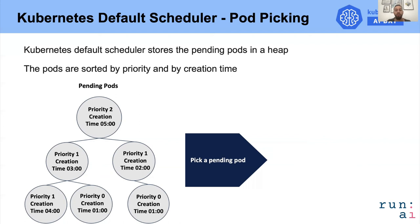This is a simplified way of presenting how the default scheduler decides what pod should be allocated next. There is also another heap called the pod backoff queue and a map for unschedulable pods, but they are not relevant to what I'm about to explain, so we will not get into them.